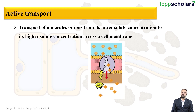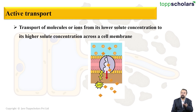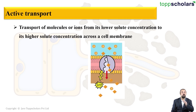Active transport is the transport of molecules or ions from lower solute concentration to higher solute concentration across a cell membrane. Pay attention — the ions are moving from lower to higher solute concentration. Whenever a substance moves from higher to lower solute concentration, it does not require energy. But here it is exactly the opposite — lower to higher — so this process requires energy.